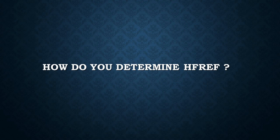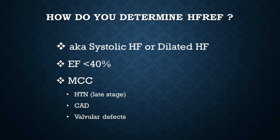Moving on to heart failure questions. The first question: How do you determine heart failure with reduced ejection fraction? Heart failure with reduced ejection fraction has an ejection fraction below 40%, also called systolic or dilated heart failure, due to dilation of the left ventricle. This is most commonly due to hypertension in its late stages, coronary artery disease, and valvular defects, leading to loss of systolic function of the left ventricle — meaning the left ventricle will not be able to contract properly.